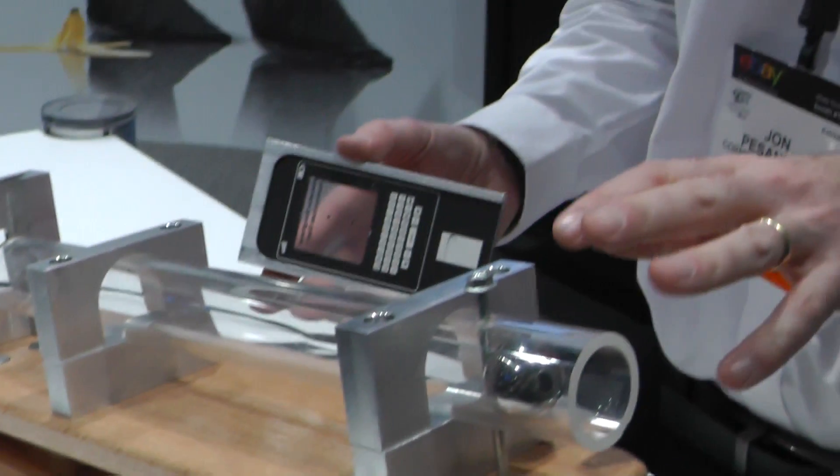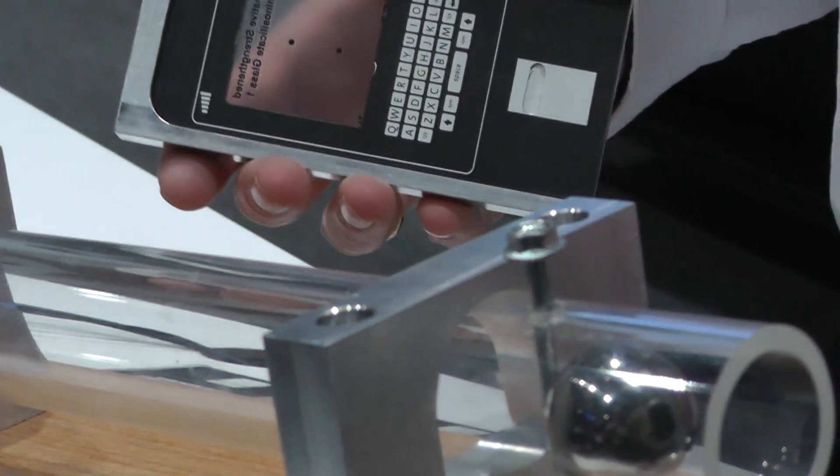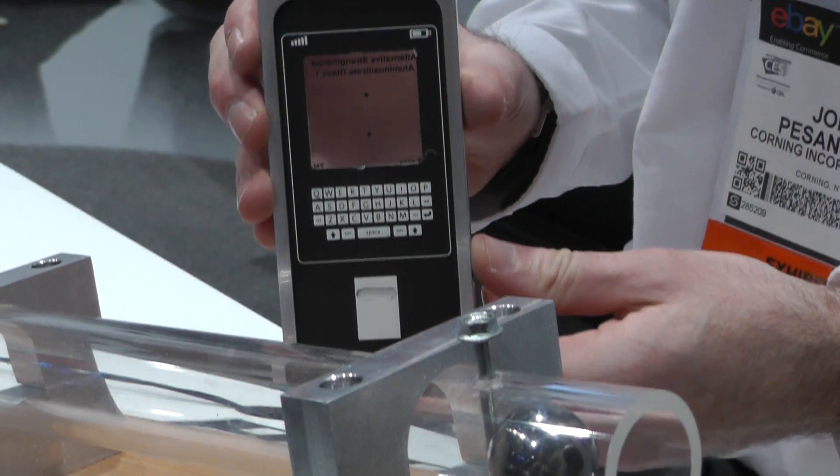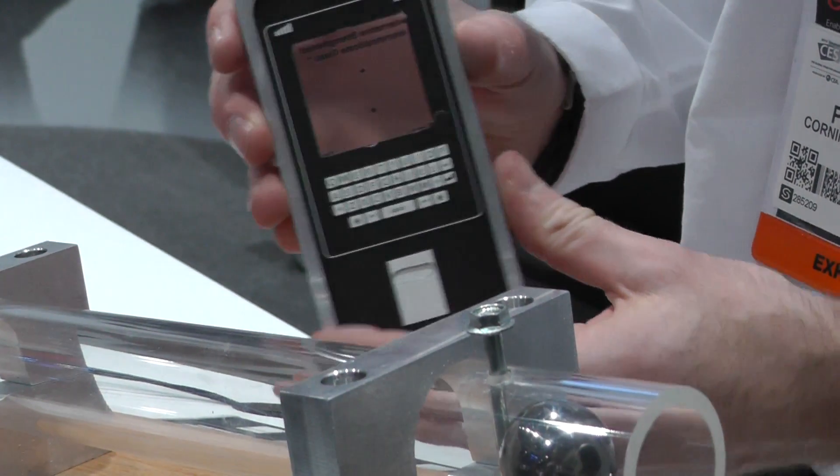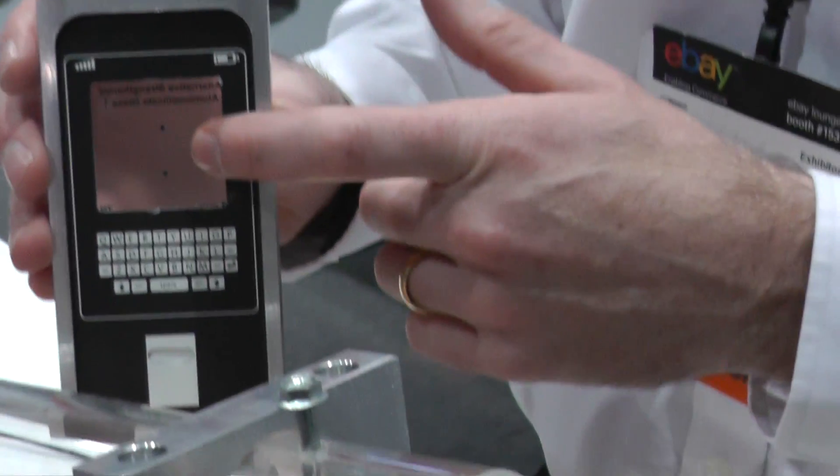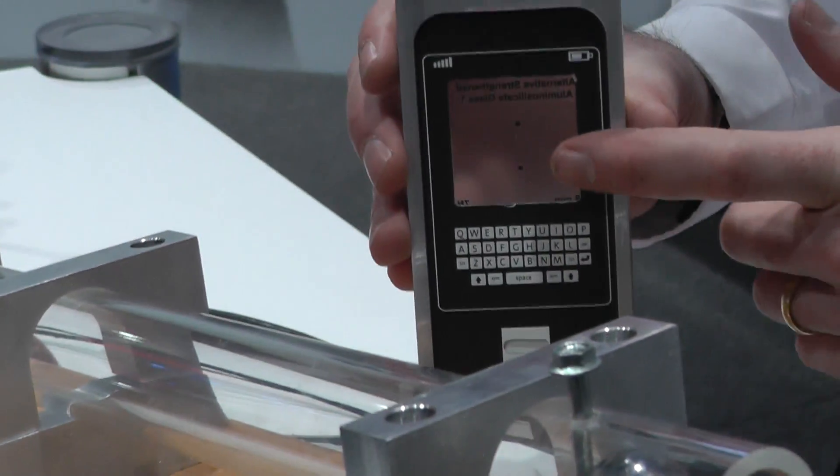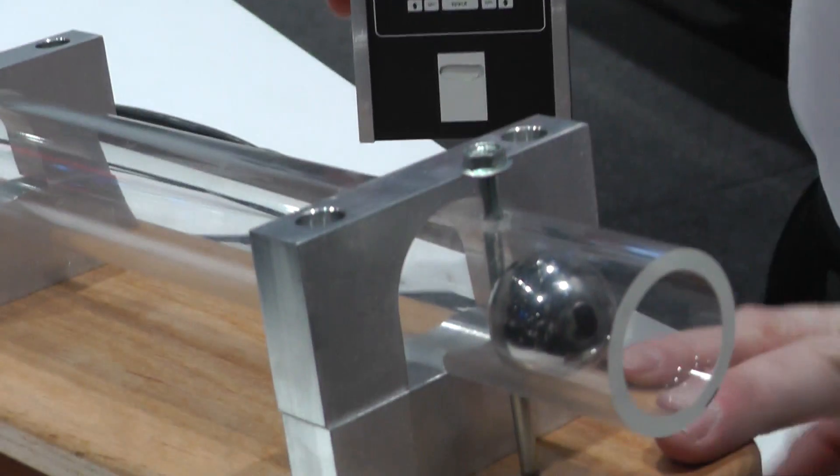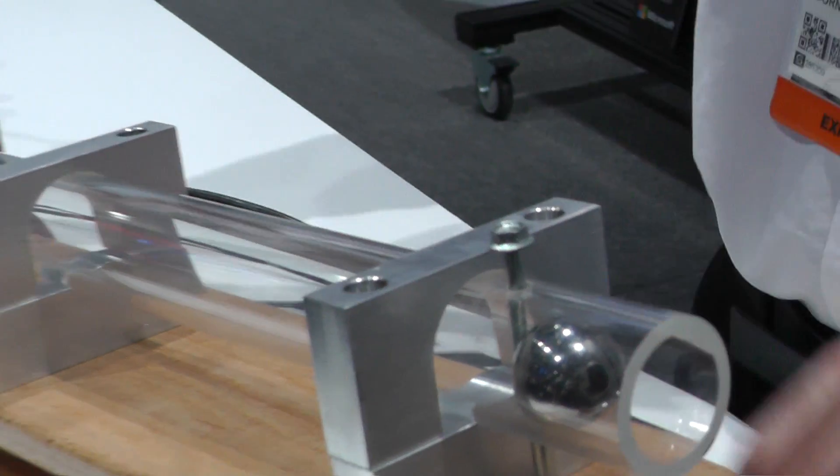We have an incline plane here where we're going to test alternative aluminum silicate glass and Gorilla Glass 3. All these samples have been scratched in the center at 0.7 Newtons with a diamond indenter. We're going to release this ball first at a 10-degree angle into the glass samples.